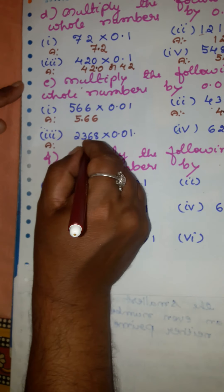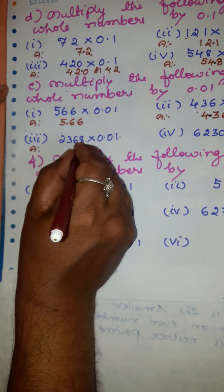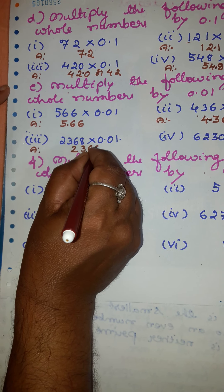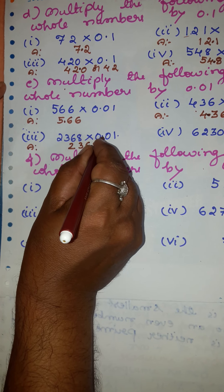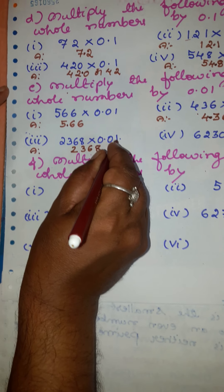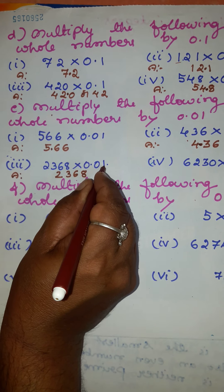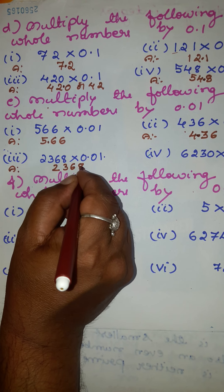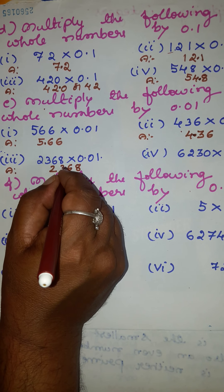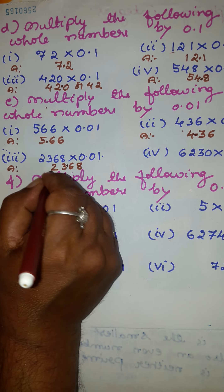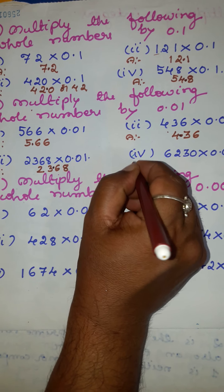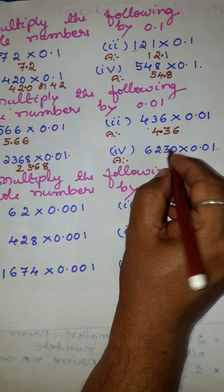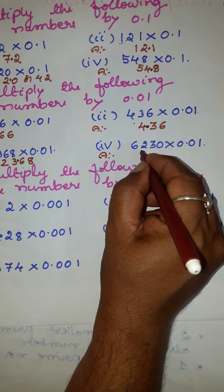Third example: we have 2368. Write this number as it is. After the decimal point two places are there. Move two places from right to left and put the point here. The answer is 23.68.